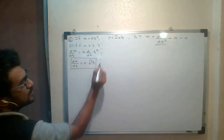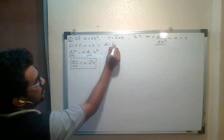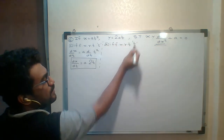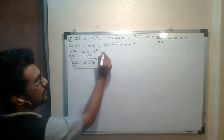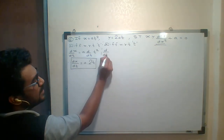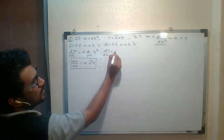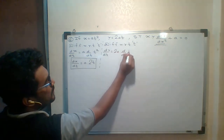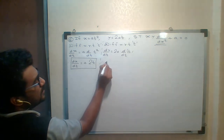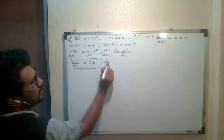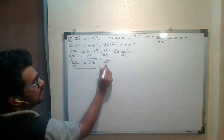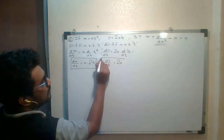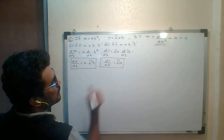Similarly, I will differentiate y with respect to t. d/dt of y: 2a is constant, d/dt of t equals 1. So what is the final answer? dy/dt equals 2a.